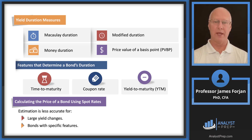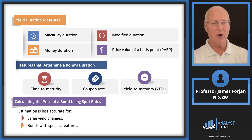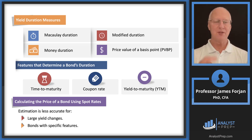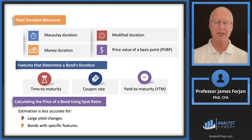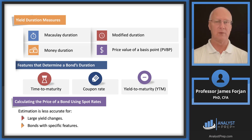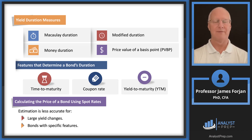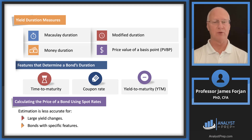Remember when we used our five time value of money buttons on the calculator — what I called the kindergarten bond pricing model? We enter those input variables and solve for price; that's a super simple model. We complexified it by saying that the kindergarten model assumes the yield to maturity is constant throughout the life of the bond — essentially a flat-sloped yield curve.